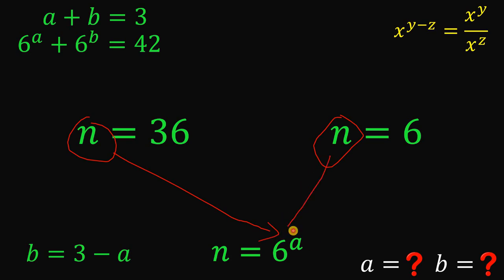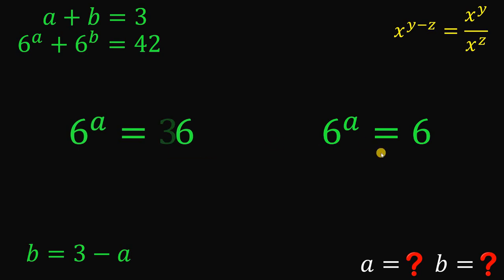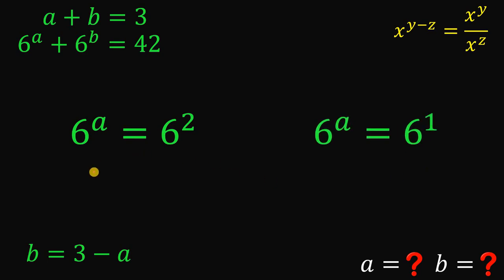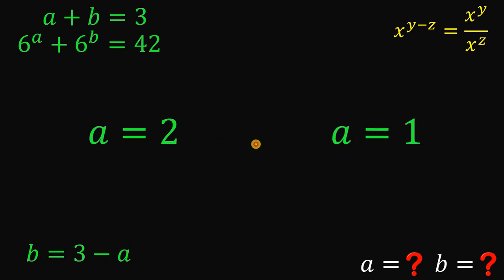We can replace N with 6 raised to the power of A. Also note that 36 can be written as 6 squared, and 6 can be written as 6 raised to the power of 1. So on the first equation, A equals 2, and on the second equation, A equals 1. So we have found A equals 2 or A equals 1.